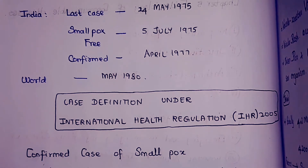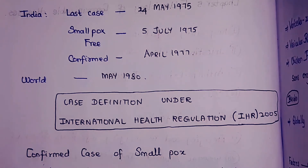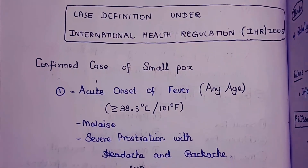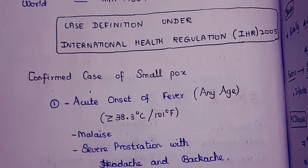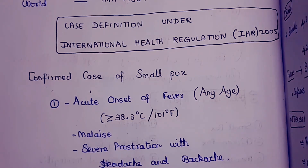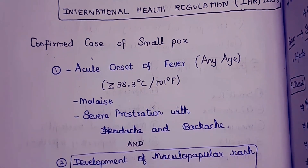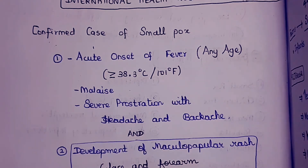Under the International Health Regulation 2005 Act, a confirmed case of smallpox includes the following features: acute onset of fever greater than 38.3 degrees Celsius or 101 degrees Fahrenheit, which may occur at any age. Along with fever, malaise and severe prostration with headache and backache are present.